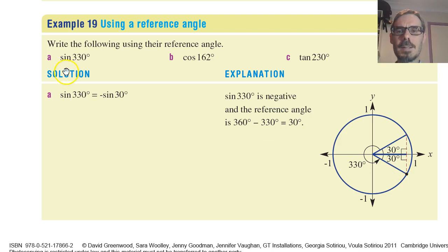We're also talking about sine, and in the fourth quadrant, sine, the y-coordinate, is negative. So sine 330 is the same as sine 30, but it's negative.